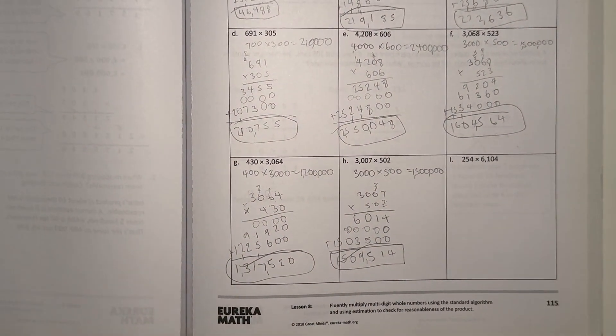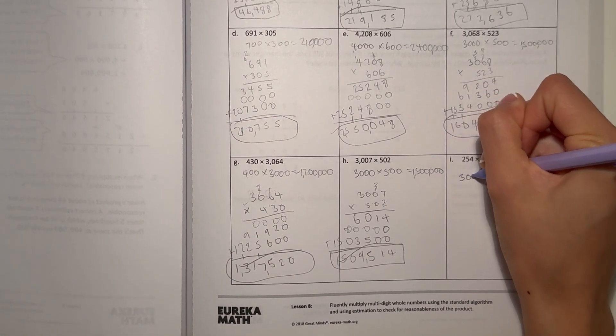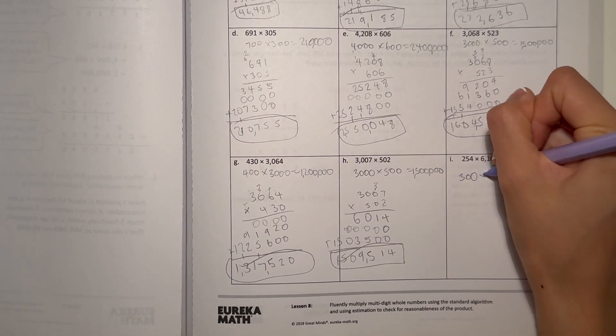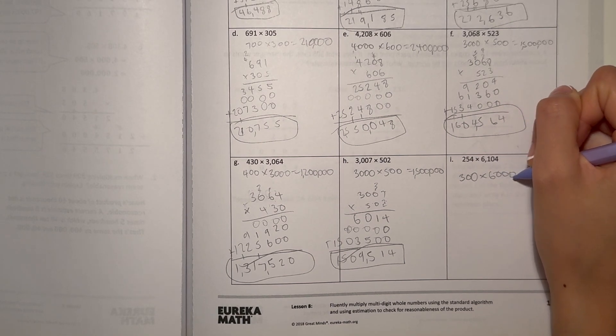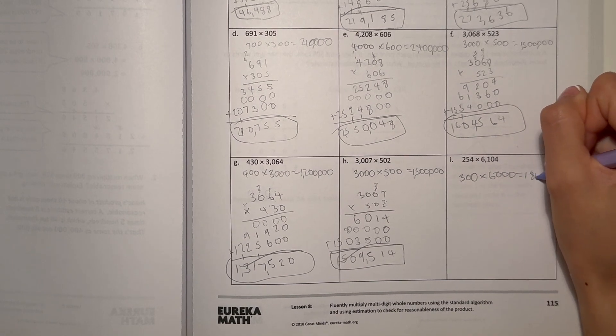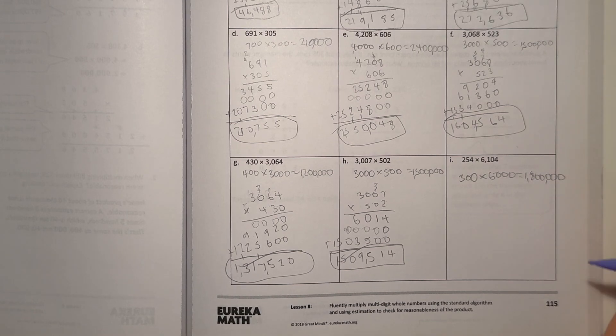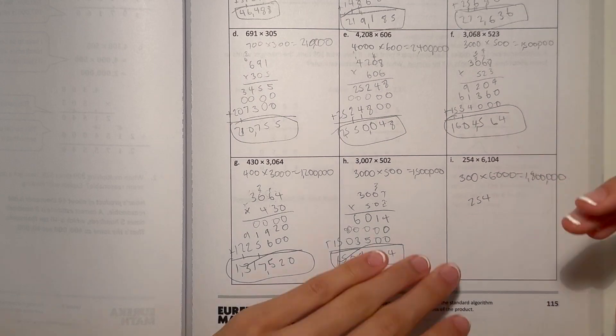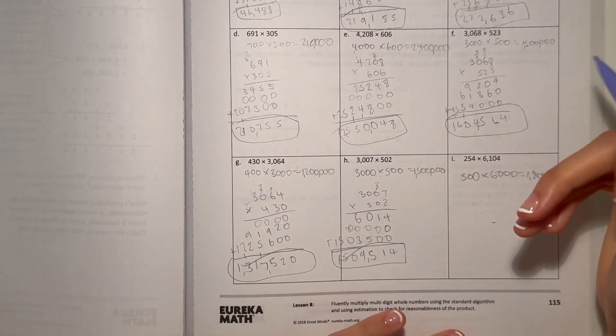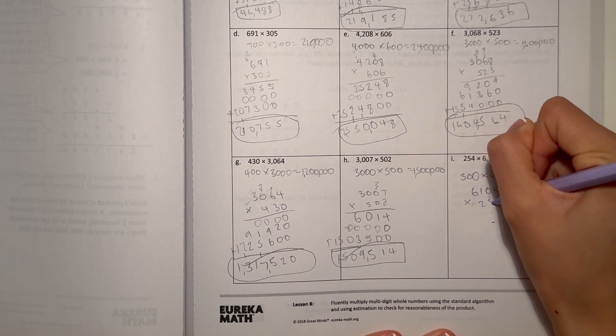I, 254 would round up to 300, since it's just past the 250 mark, times 6,000. 3 times 6 is 18, and add the zeros. 1,800,000 is our estimate. Let's write it on top. Times 254.